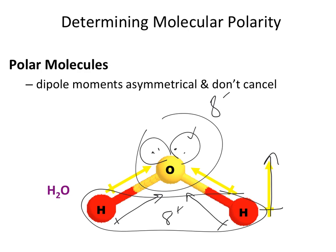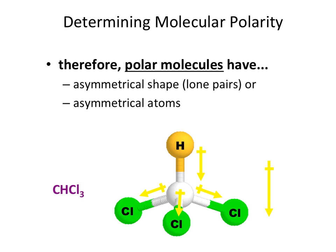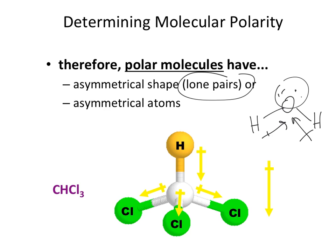An easy way to determine if a molecule is polar is to look at the types of atoms bonded to the central atom and whether lone pairs are present. If you have dipole moments within the bonds and the central atom has a set of lone pairs, you are going to have a polar molecule. In the case of water, even though there are the same types of atoms bonded to the central atom, the lone pairs and lack of symmetry make it polar.